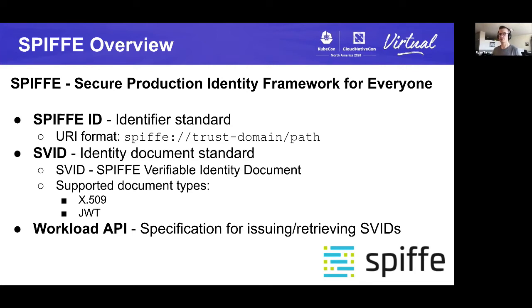The second part of the specification defines an identity document standard — how this identity gets represented. This is what we refer to as an SVID, which stands for SPIFFE Verifiable Identity Document, and that comes in two different forms: one is an X.509 certificate and another is a JSON Web Token. The third part of the SPIFFE specification is the Workload API, which talks about how to retrieve and issue SVIDs throughout an environment.